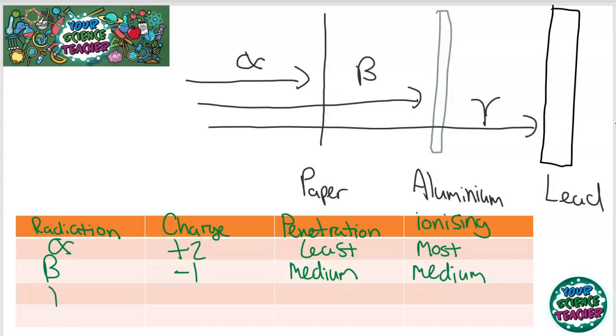And then the last one is gamma radiation. And I said it doesn't have a charge because it's a high energy wave. It is the most penetrating. It will travel through the paper and aluminium quite easily. But it will get stopped by thick lead. So that's why gamma sources are usually kept in real thick lead containers. And it's the least ionizing. So it causes the least amount of harm.